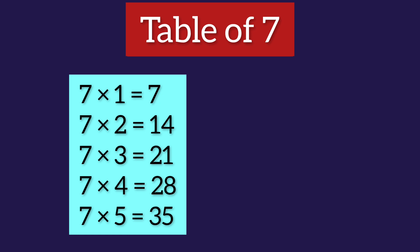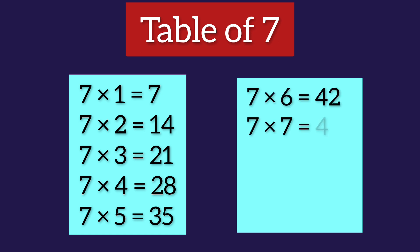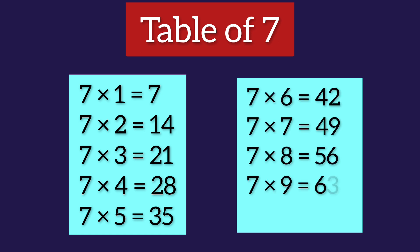Let's see once again. 7 1's are 7. 7 2's are 14. 7 3's are 21. 7 4's are 28. 7 5's are 35. 7 6's are 42. 7 7's are 49. 7 8's are 56. 7 9's are 63. 7 10's are 70.